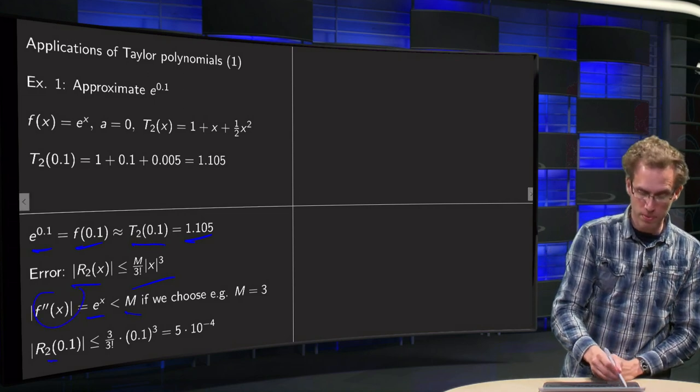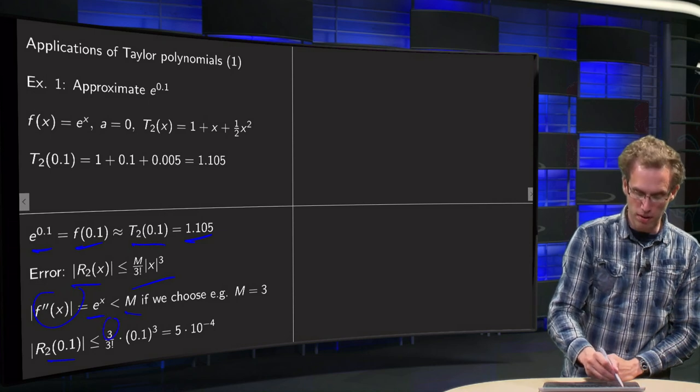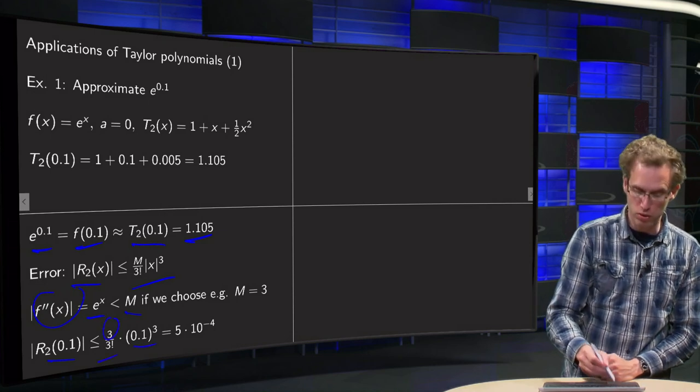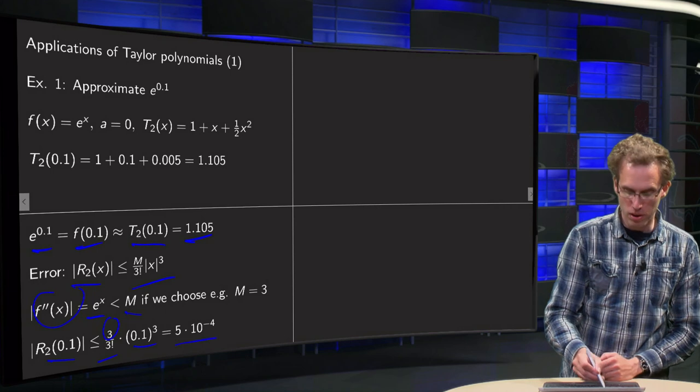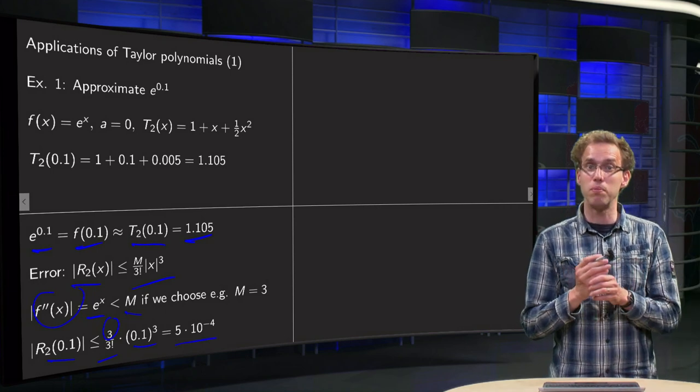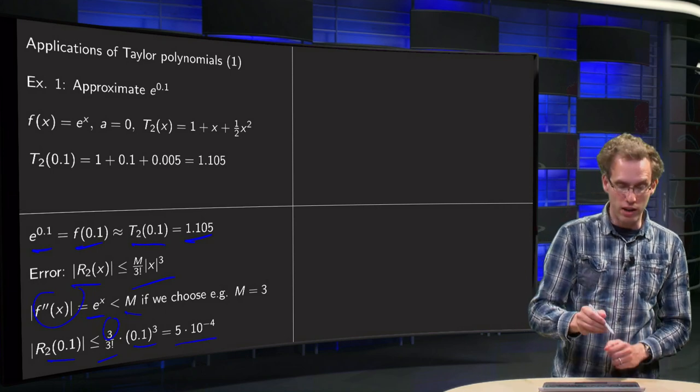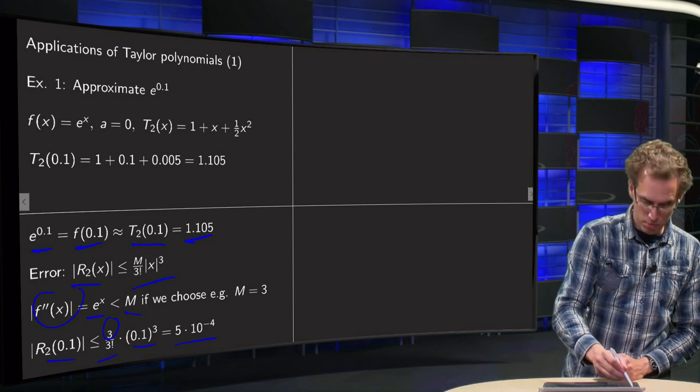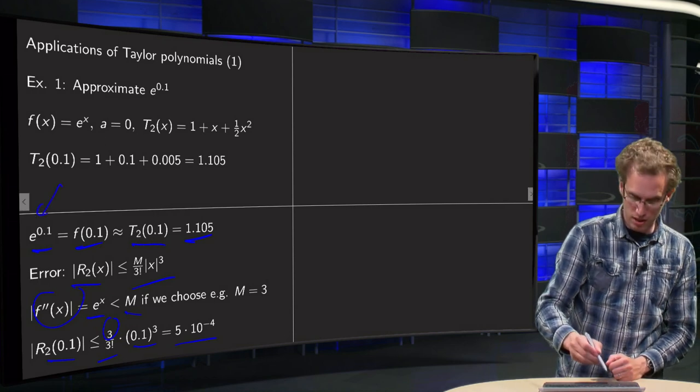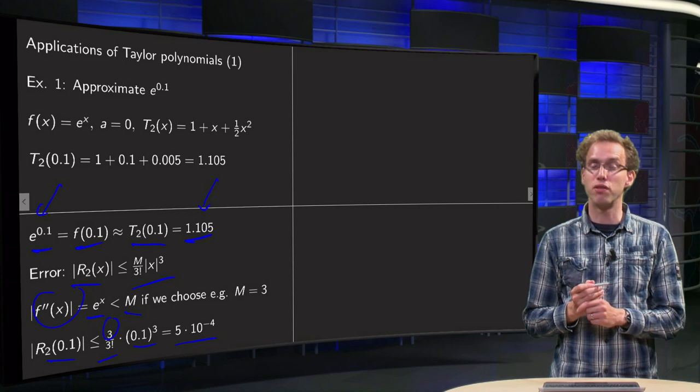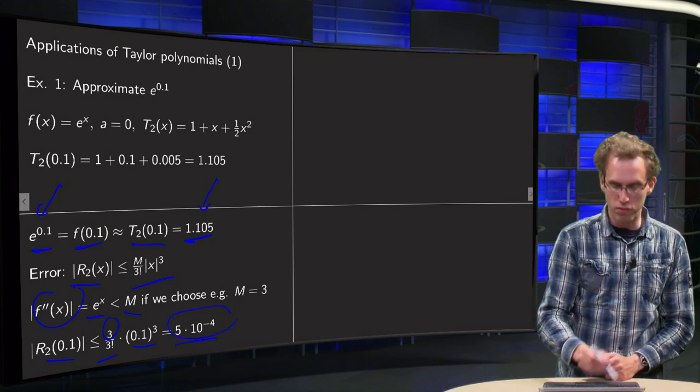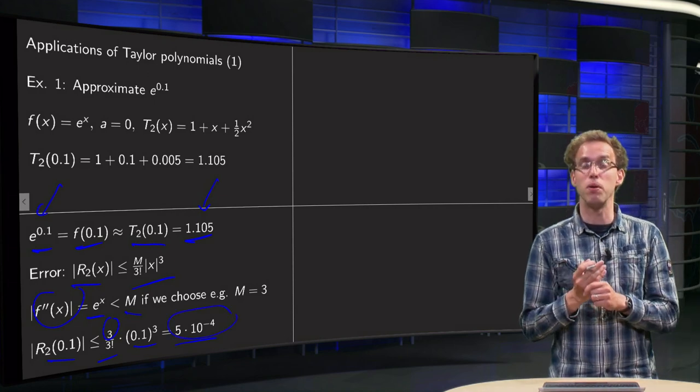So then I know the remainder equals this M divided by 3 factorial times 0.1 to the power 3 is smaller than 5 times 10 to the minus 4, so I know that my exponential here is equal to 1.105, with at most an error of order 10 to the minus 4 in the last decimal place.